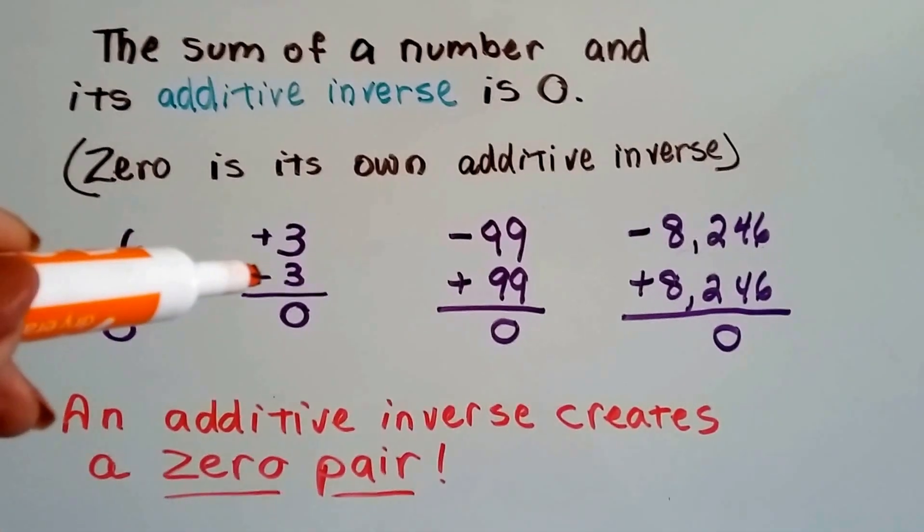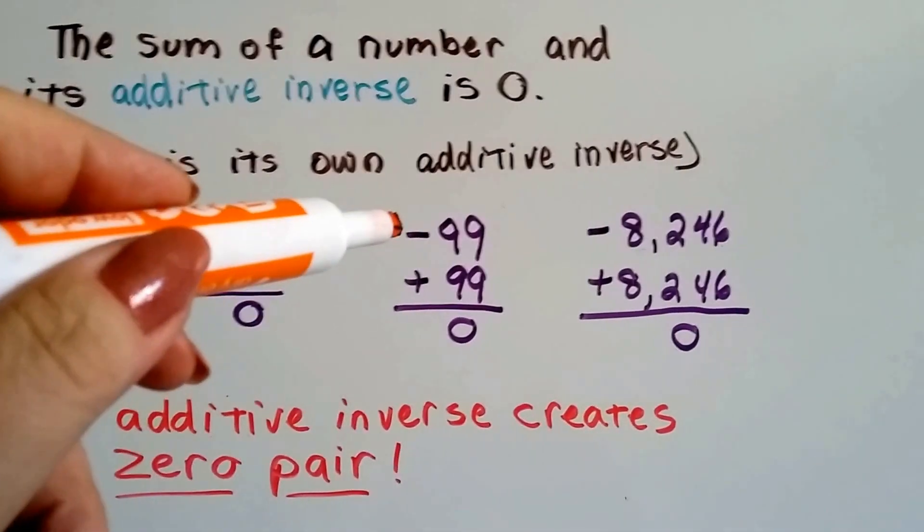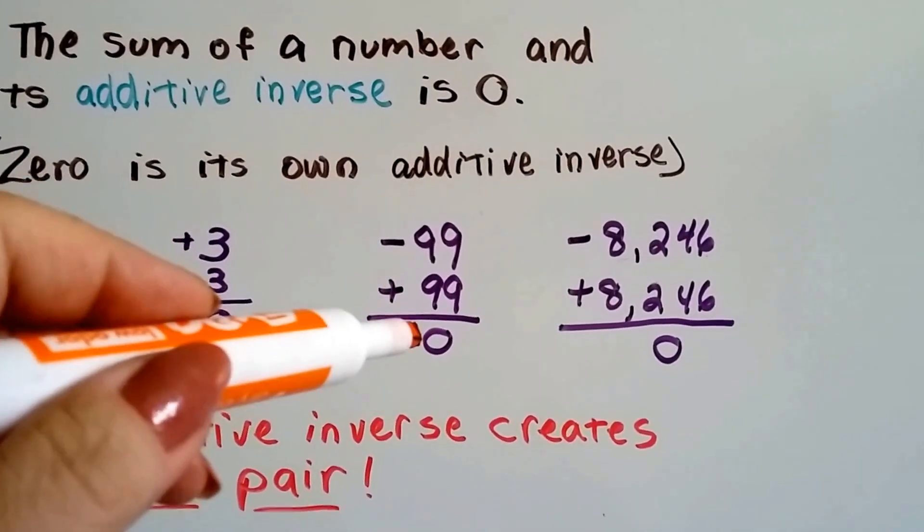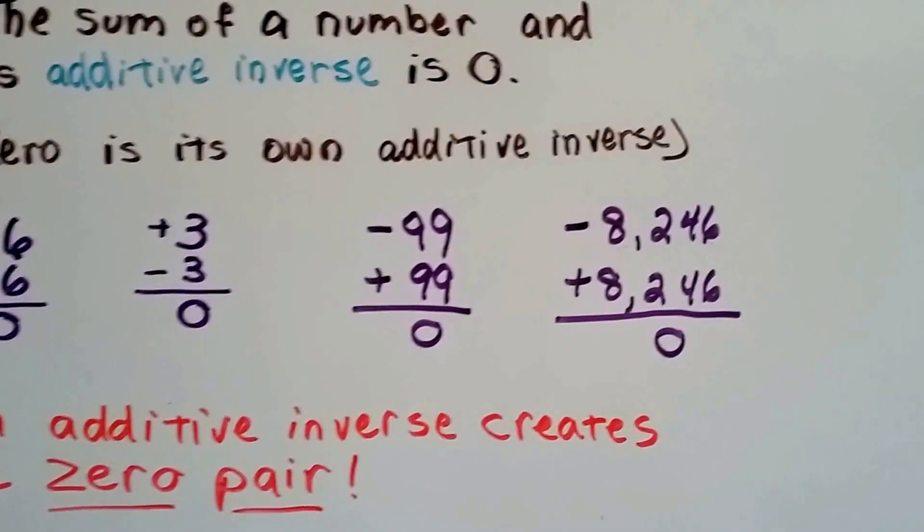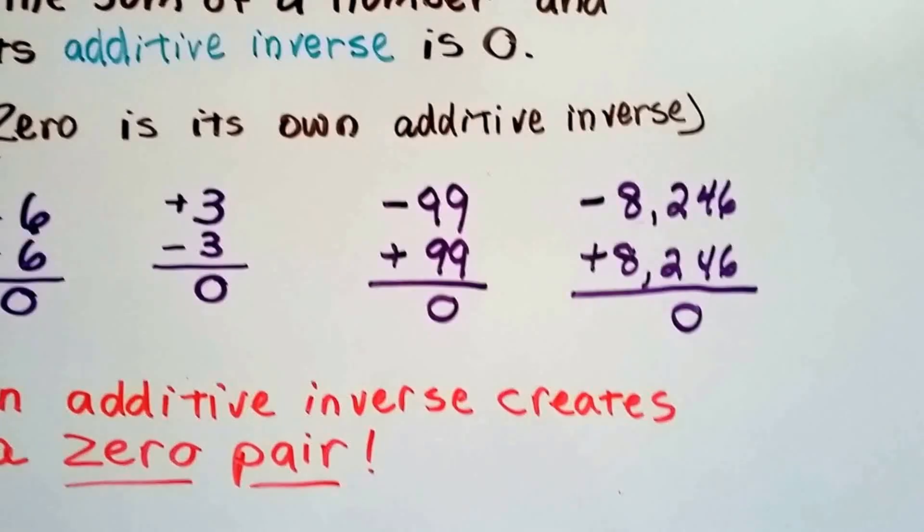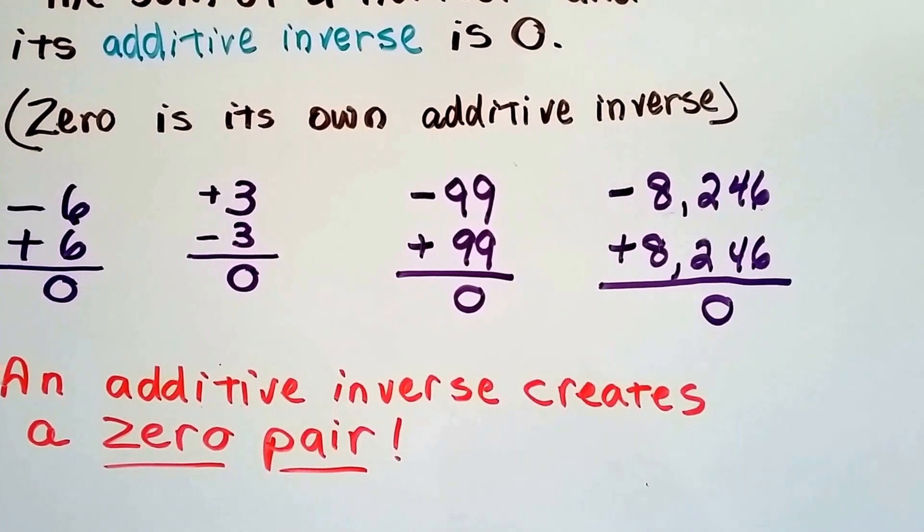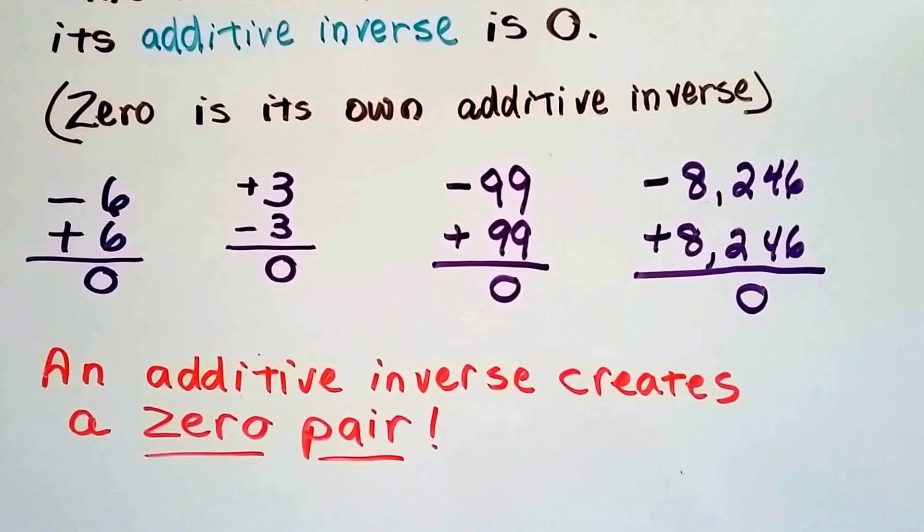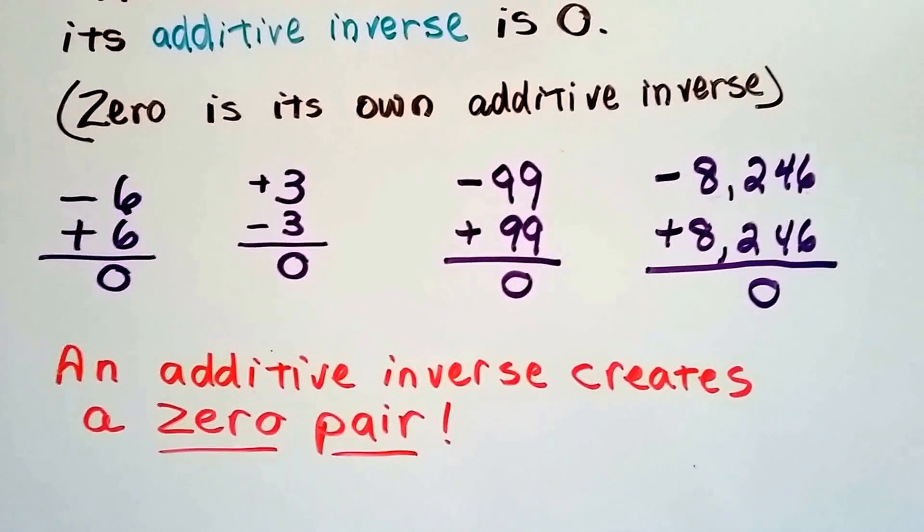Positive 3 and we add a negative 3, we're at zero. We have a negative 99 and add a 99, we're at zero. And even if we're at negative 8,246 and we add 8,246, we're going to have zero. An additive inverse creates a zero pair.